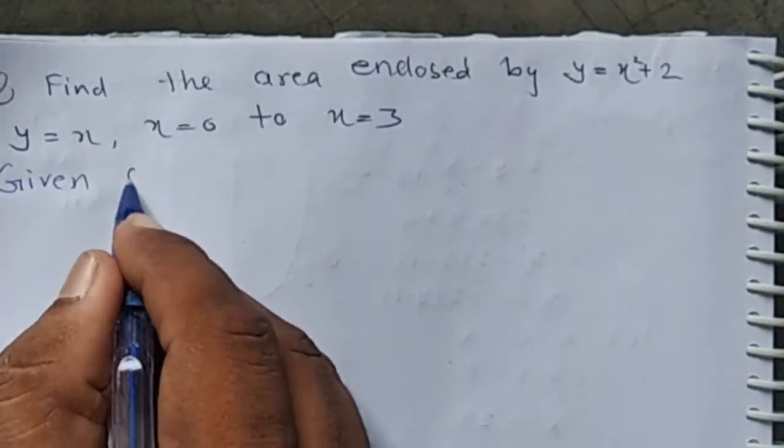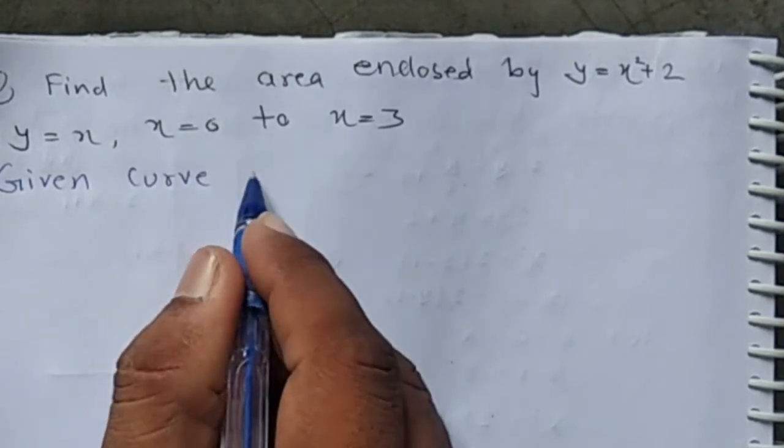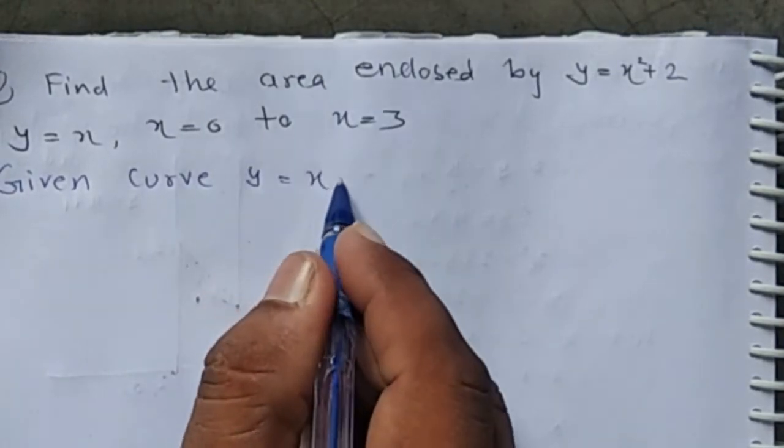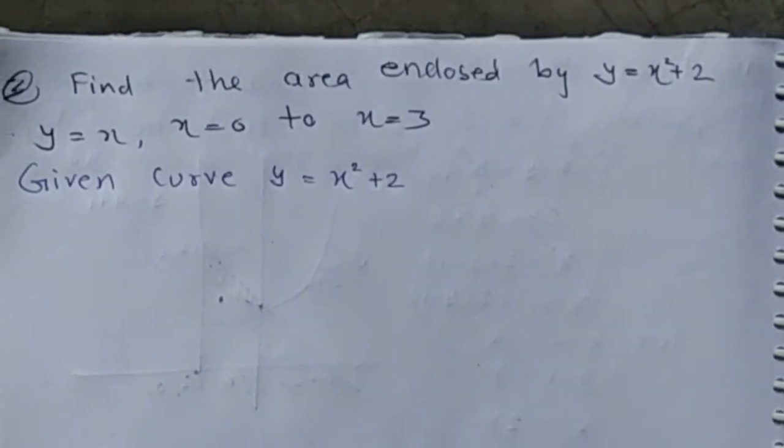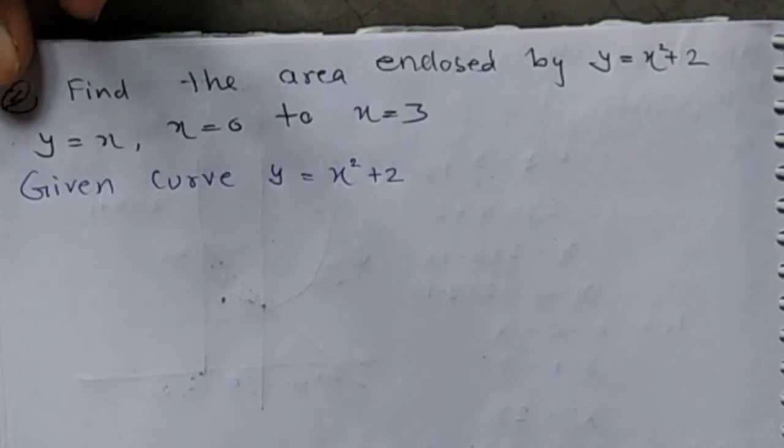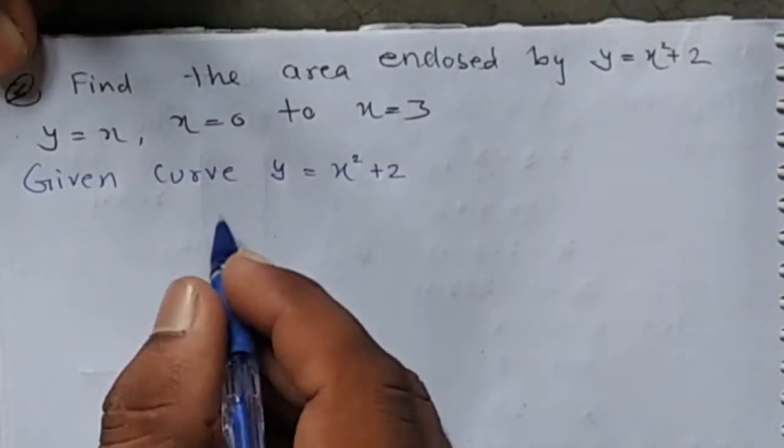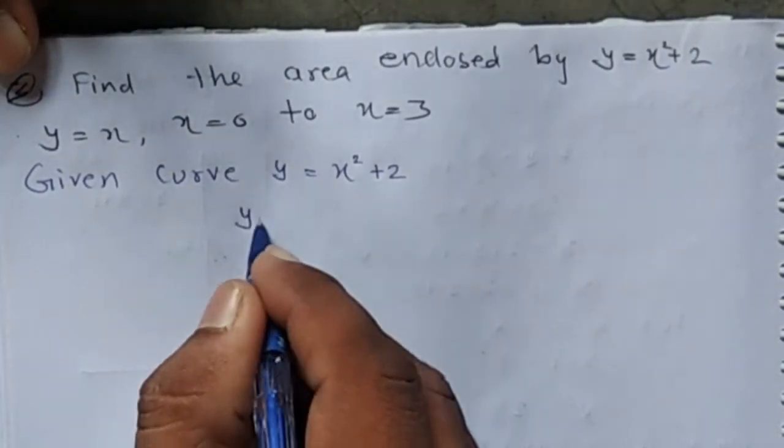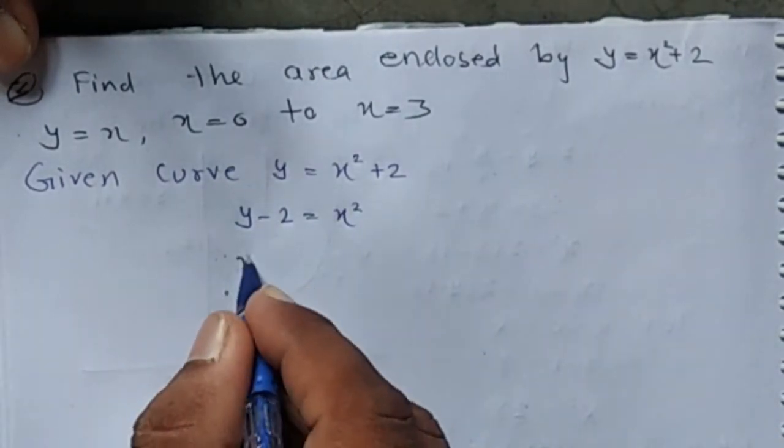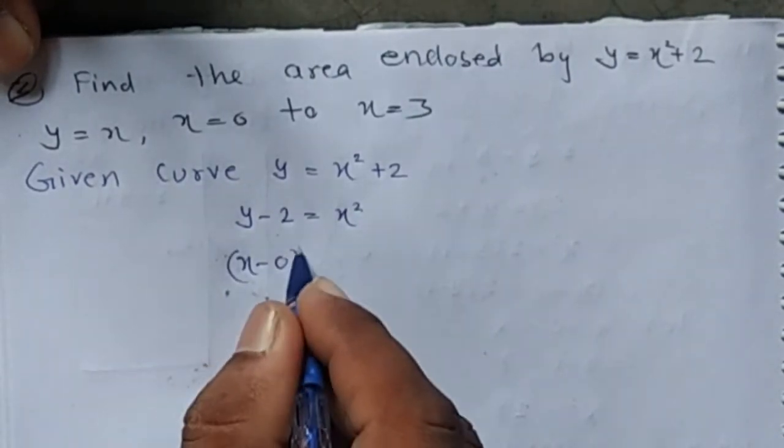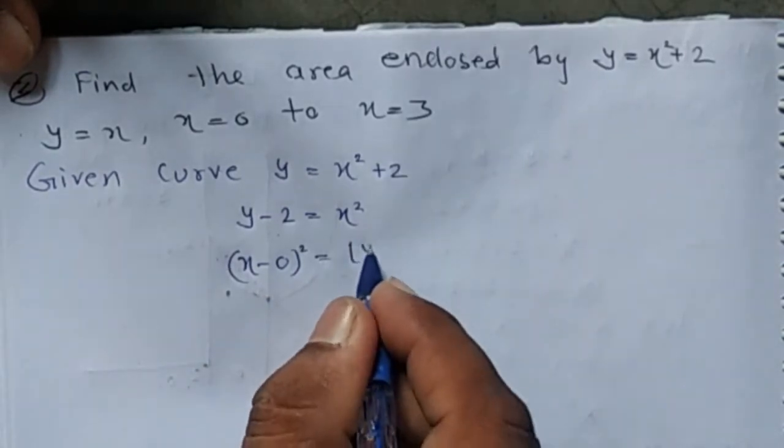Given curve y equals x squared plus 2, we have y minus 2 equals x squared, and it can be written as x minus 0 equals y minus 2.